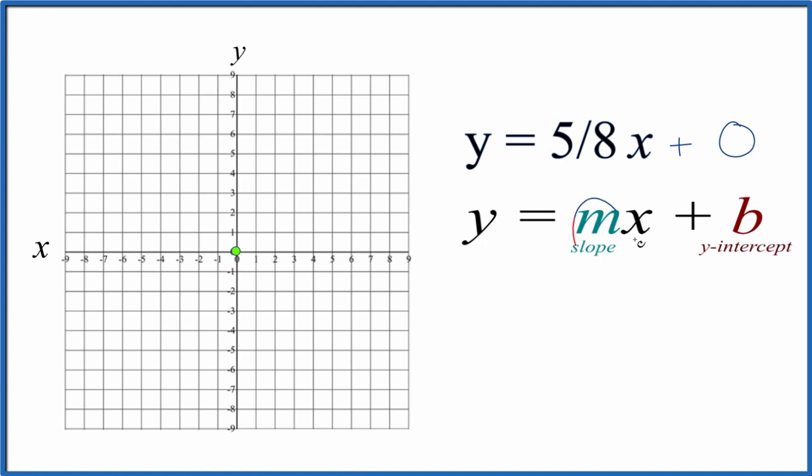For the slope, that m, that's 5/8. So what we can do is call this rise over run. And now we go up five and over eight. So we go to our y-intercept, we go up five and then over eight, and there's our point.